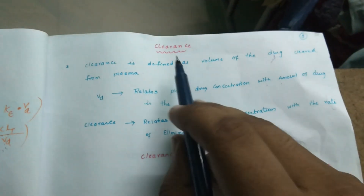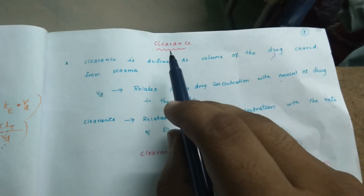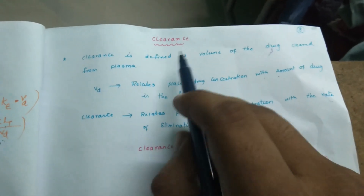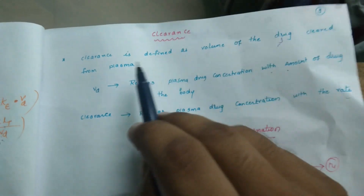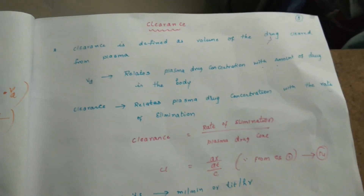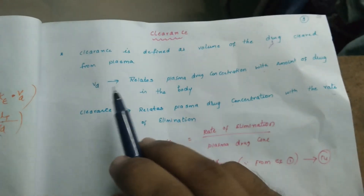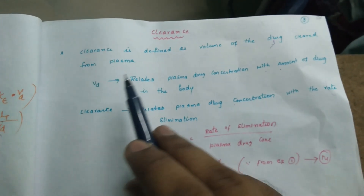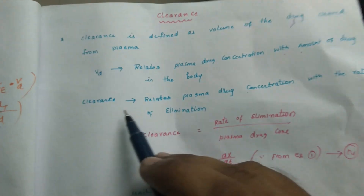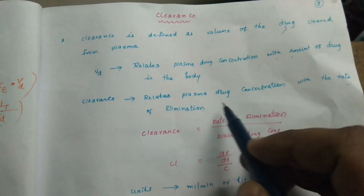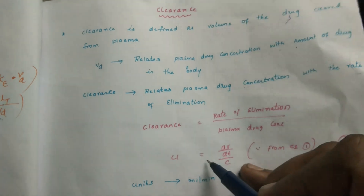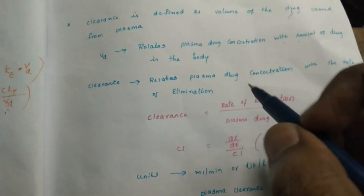Today's topic is clearance, a continuation of Part 1 on the IV one-compartment open model. Clearance is defined as the volume of drug cleared from plasma. The difference between volume of distribution and clearance is that volume of distribution relates plasma drug concentration to the amount of drug in the body, whereas clearance relates plasma drug concentration to the rate of elimination. CL equals rate of elimination divided by plasma drug concentration, or CL = (dx/dt) / C.